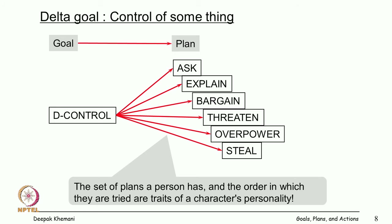So if you have knowledge about some domain or world, you can use it to understand stories, to generate stories, or even to generate actions — like memory-based planning. The set of plans that a person has and the order in which they are tried could be traits of a person's character. If you have six possible plans, different combinations define different kinds of people — different personality types.